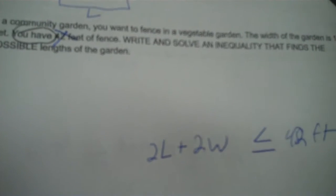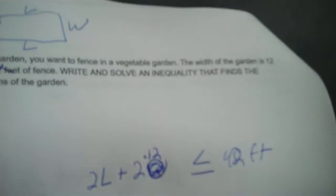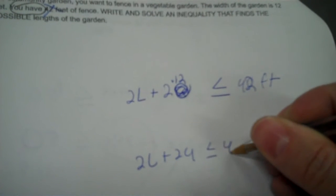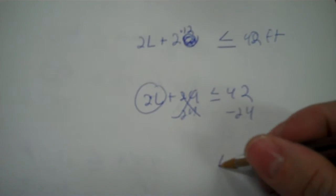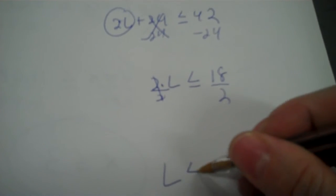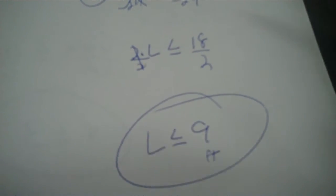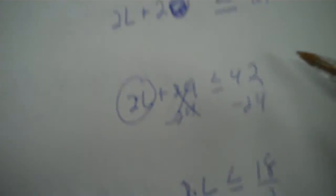How many widths do you have? You're also going to put on the widths — plus 2W. I have 12 for the width I know, so get rid of the width variable and put times 12. Simplify: 2 times 12 is 24. So 2L plus 24 less than or equal to 42. Now solve it — minus 24 gives 18, then divide both sides by 2. L is less than or equal to 9 feet. The length can be 9 or anything less than that. You can't go over 9 because you only have a certain amount.